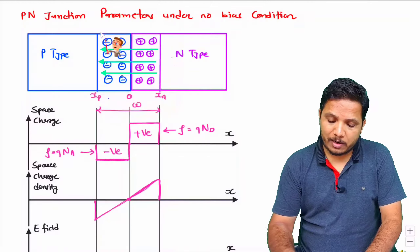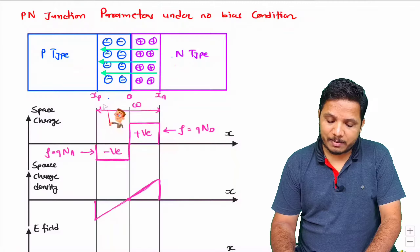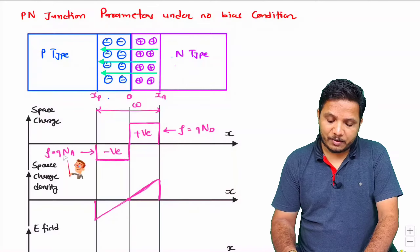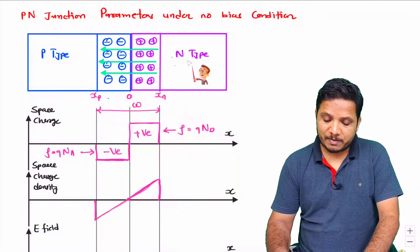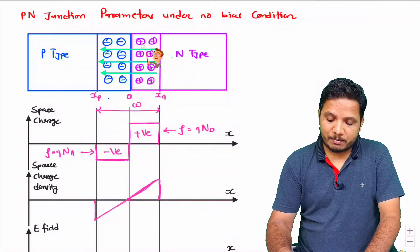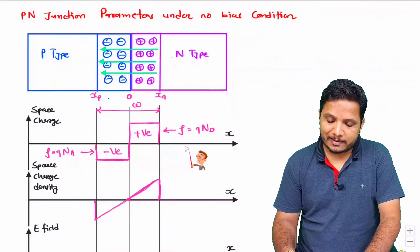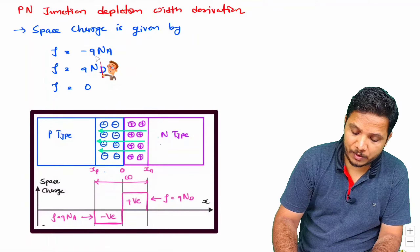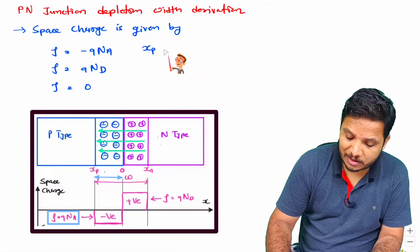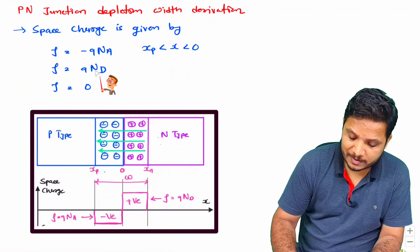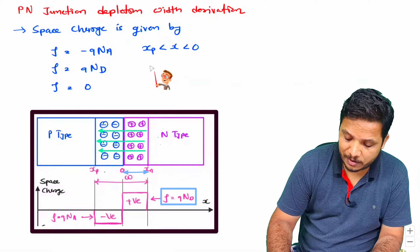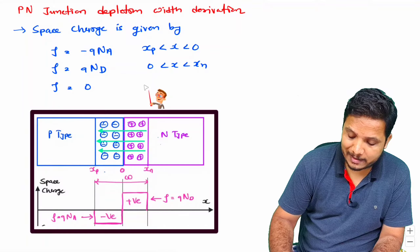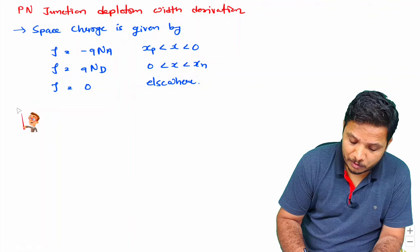As discussed, we have a depletion region, and in this video I will explain how we can derive a formula for the width W. As stated in my previous video, the space charge is Q·Na (negative for P-type material), Q·Nd (positive for N-type material), and 0 elsewhere. Space charge is −Q·Na in the region Xp to 0, Q·Nd in the region 0 to Xn, and 0 elsewhere.